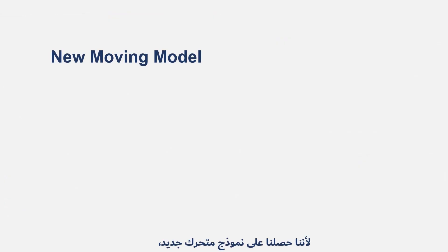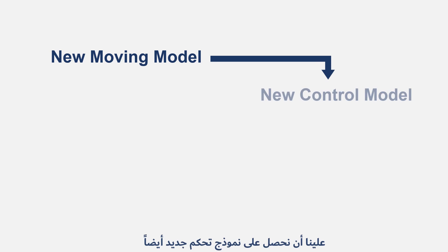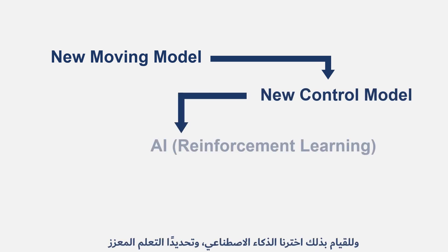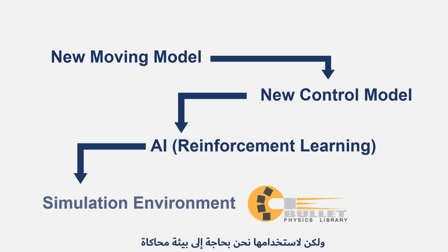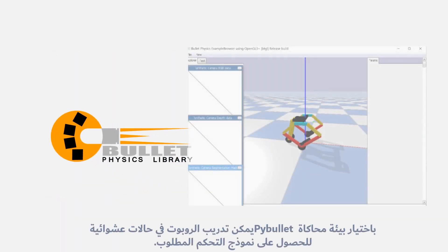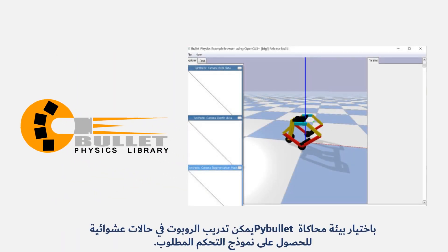Because of having a new moving model, we have to get a new control model too. To do that, we chose AI, specifically reinforcement learning. To use it, we need a simulation environment. Choosing the PyBullet simulation environment, the robot can be trained in random situations to get the desired controlling model.